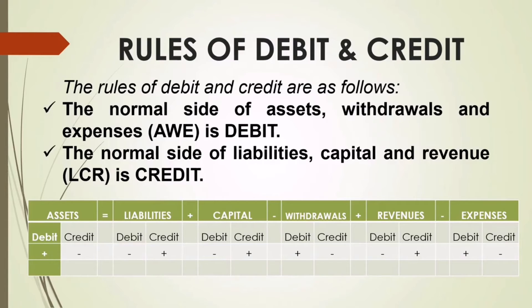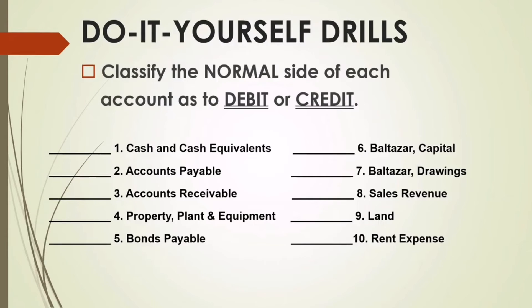Be sure to familiarize yourself with the accounting equation and the rules of debit and credit. We are going to proceed with our do-it-yourself drills to practice whether you are able to grasp the theories presented. When you say normal side, that is the side of the account you use to increase them. We will start with number one: cash and cash equivalents. Cash is an asset, and the normal side of an asset is debit, so the answer for number one is debit.